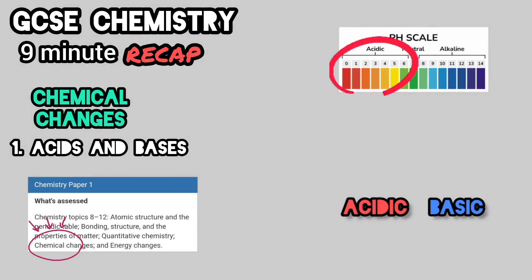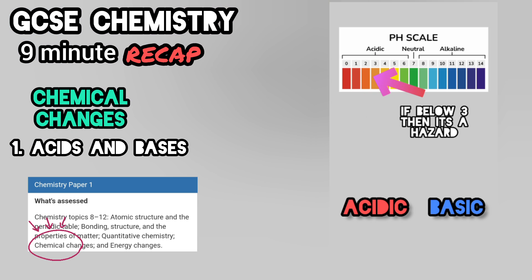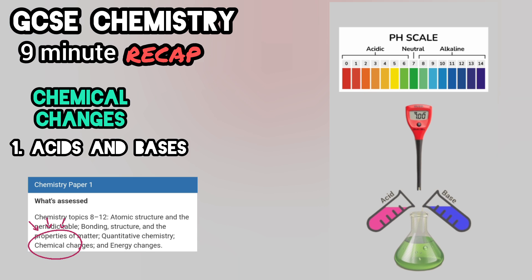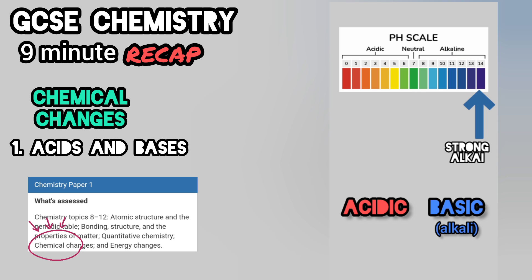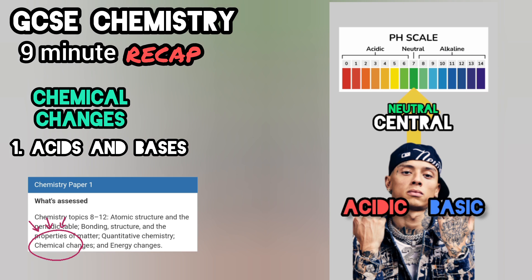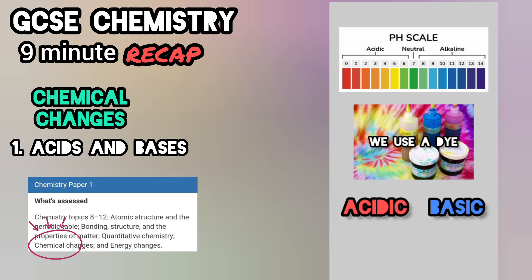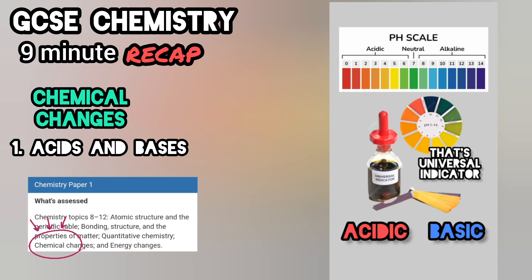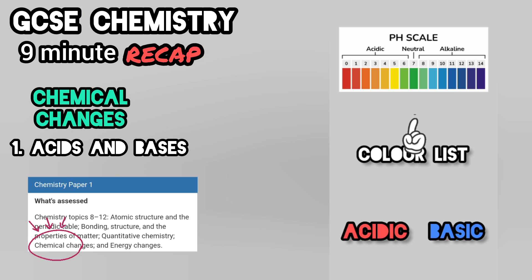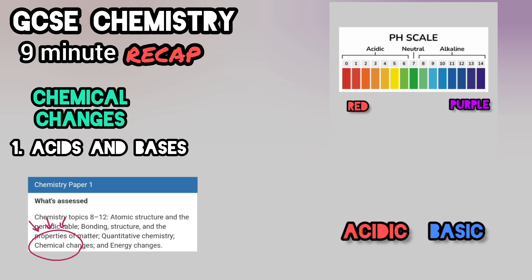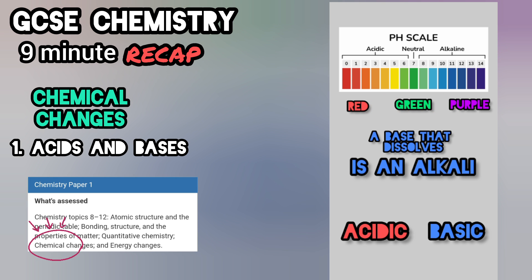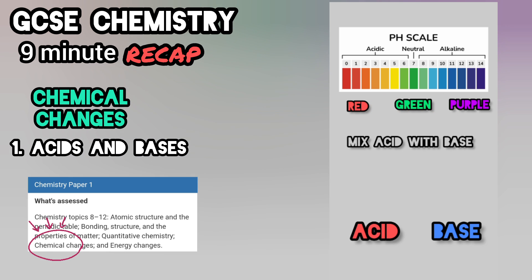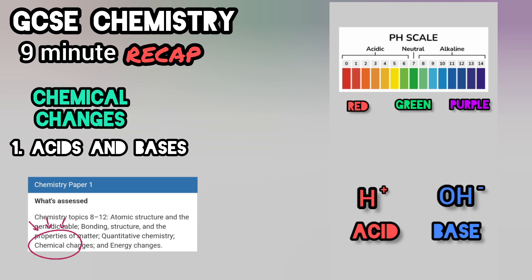First let's start with acids: one is strong and six is weak. If below three then it's a hazard — pH meter, here's the technique. For eight to fourteen that means it's an alkali: fourteen strong and eight is weak, neutral central at seven. For colour change we use universal indicator. In purple they're the extremes — in the middle, neutral is green, orange and yellow and blue in between. A base that dissolves is an alkali. If it's acid with base you get a surprise: H⁺ plus OH⁻ gives neutral.